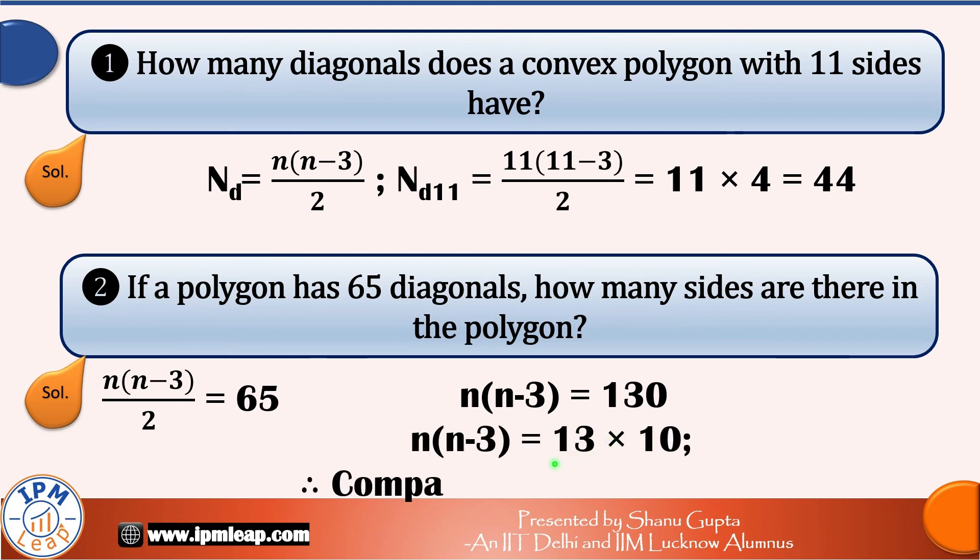So we know 130 can be written as 13 into 10. And therefore, comparing both sides of the equation, n is equal to 13.